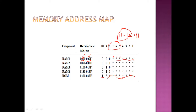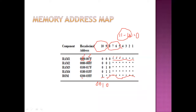For the ROM address range, we look at bits 9 to 12. For the minimum range, we have 0 0 1 0, where the bit pattern 1 0 represents 2, so we have 0200 and the rest are zeros. For the maximum range, putting all ones gives us 3 and F F, resulting in 03FF. This is how the ROM address range is derived.